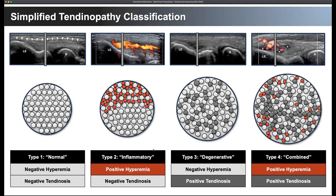With that, we developed a simple, qualitative classification combining what we've seen in that reliability study. A type 1 tendon would essentially be a normal tendon — no hyperemia and no tendinosis. Type 2, what we call inflammatory, refers to chronic neovascularization in the tendon that feels like an acute flare-up — positive hyperemia with absence of tendinosis. Type 3 is a primarily degenerative tendon, with the presence of tendinosis without any overwhelming hyperemia or neovascularization. And type 4 is a combined issue: chronic degenerative tendinosis with overlying hyperemia. This allows us to start identifying separate, discrete patient populations that may or may not benefit from certain treatments.